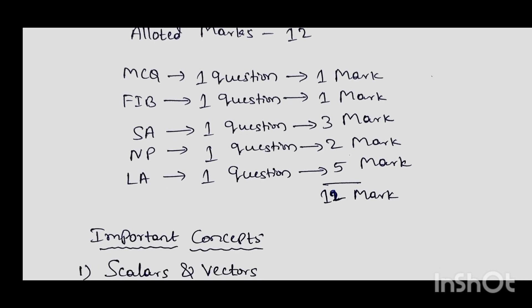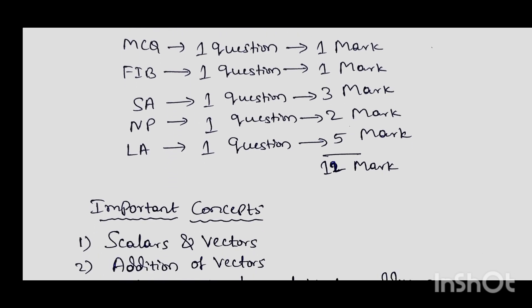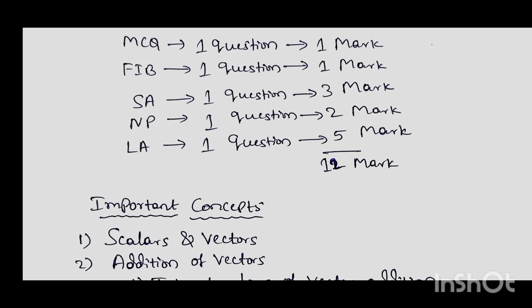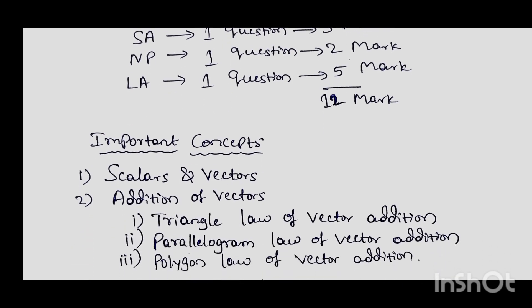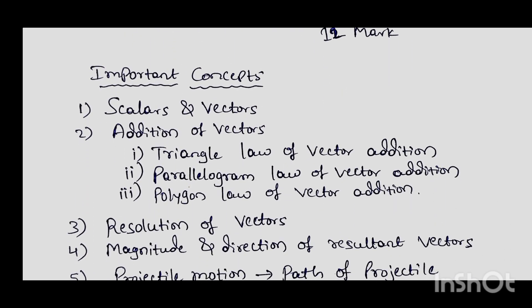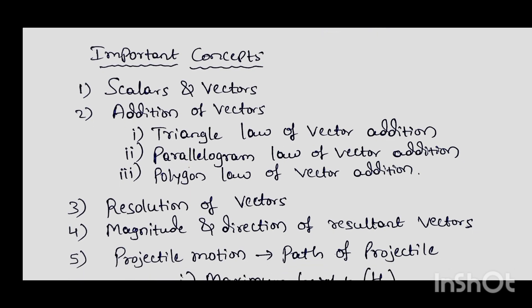If you prepare these concepts, you will easily get 12 marks in your annual theory exam. The first important concept is scalars and vectors — a very important concept in this chapter. From this concept you are going to get two-mark questions.